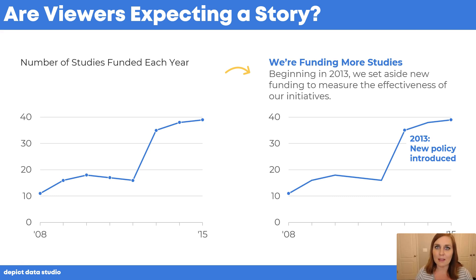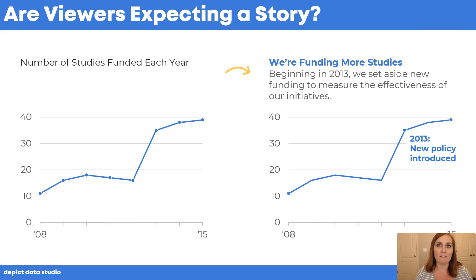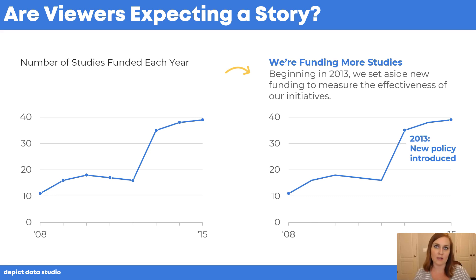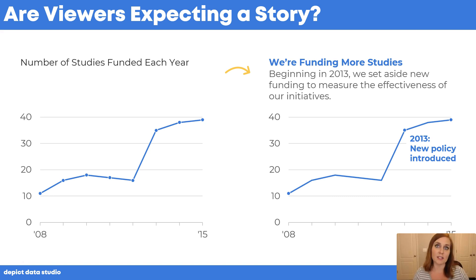I'm not telling them what to do — I'm not in an advocacy role like that. I'm just helping them read the graph: what are the highs and lows, are things generally increasing or decreasing over time, and why are we seeing this pattern?